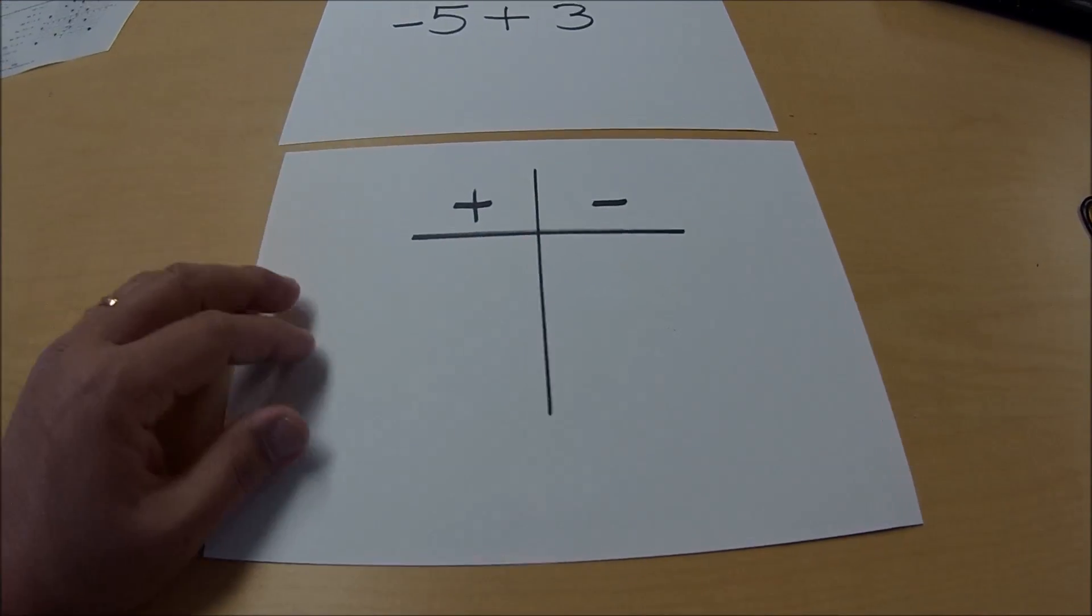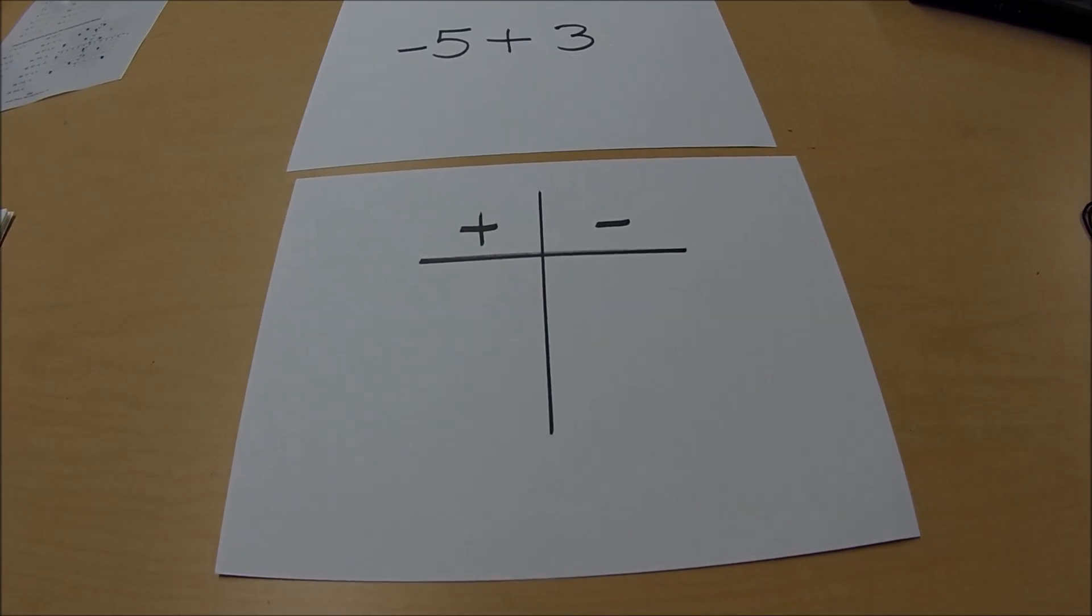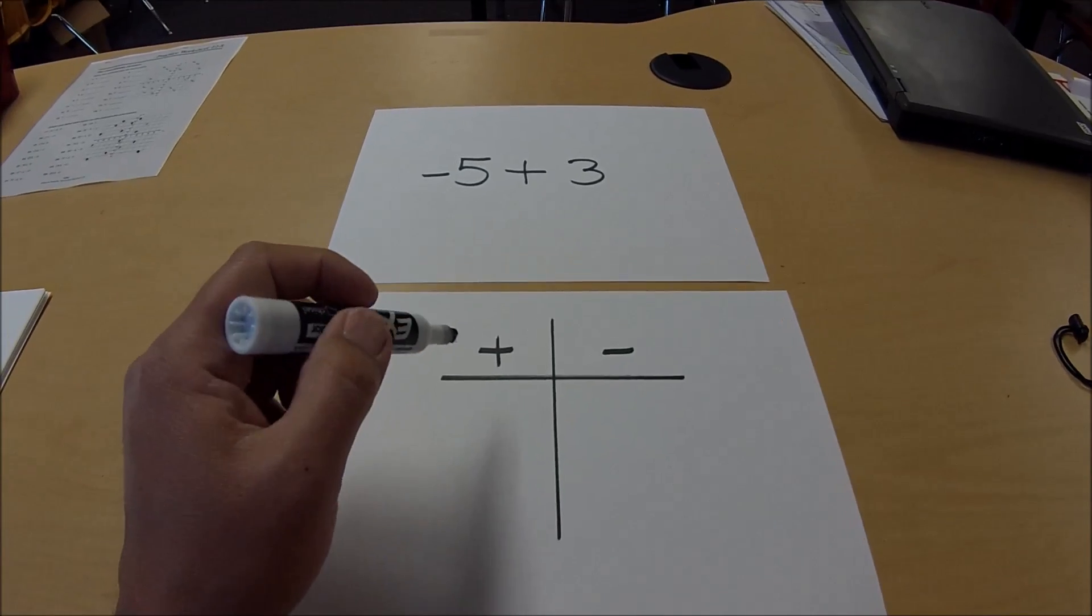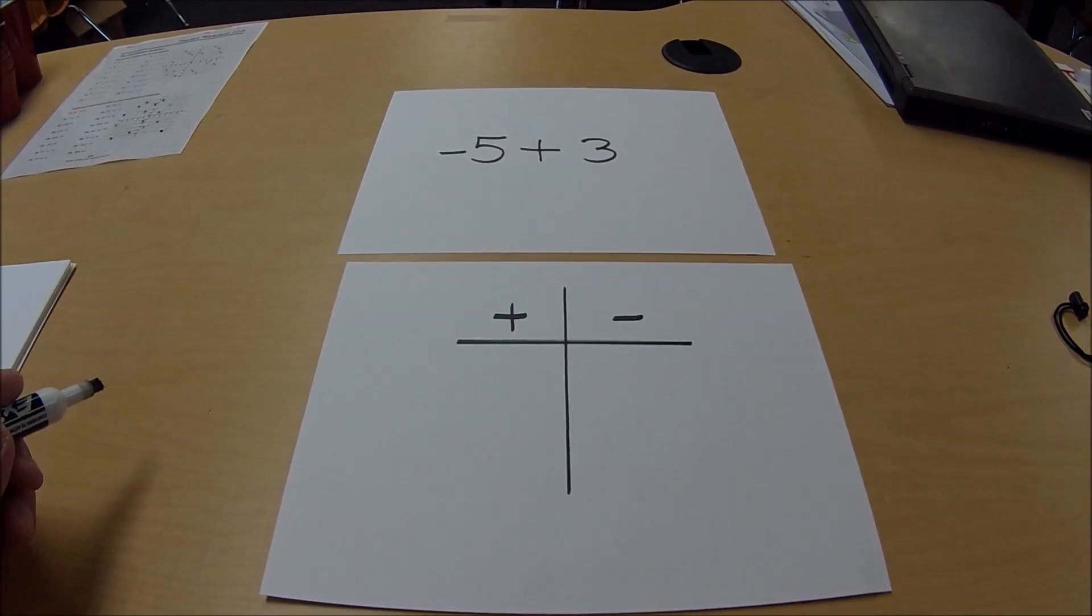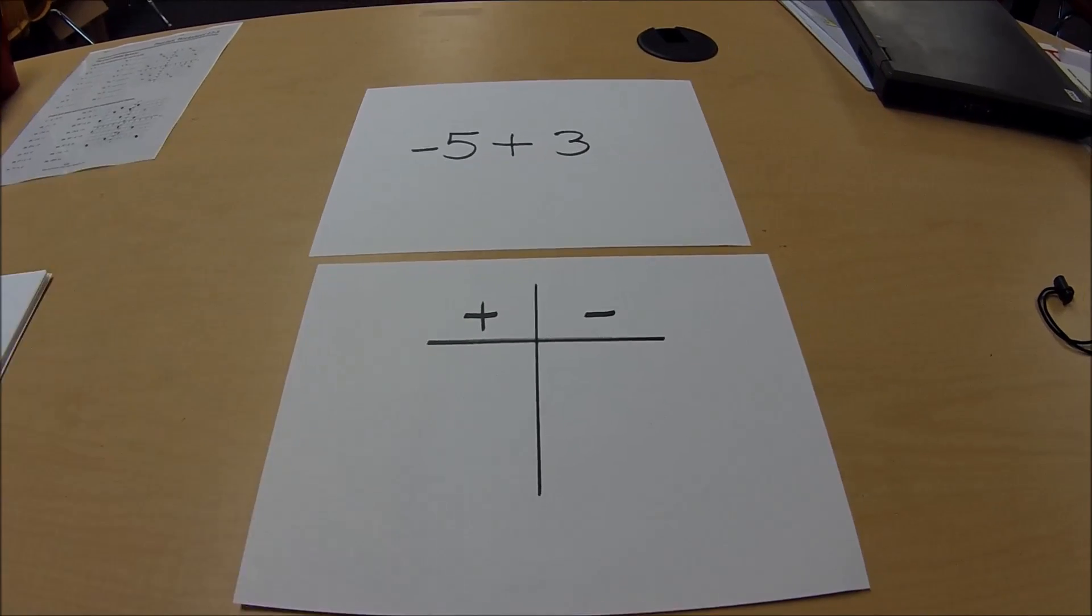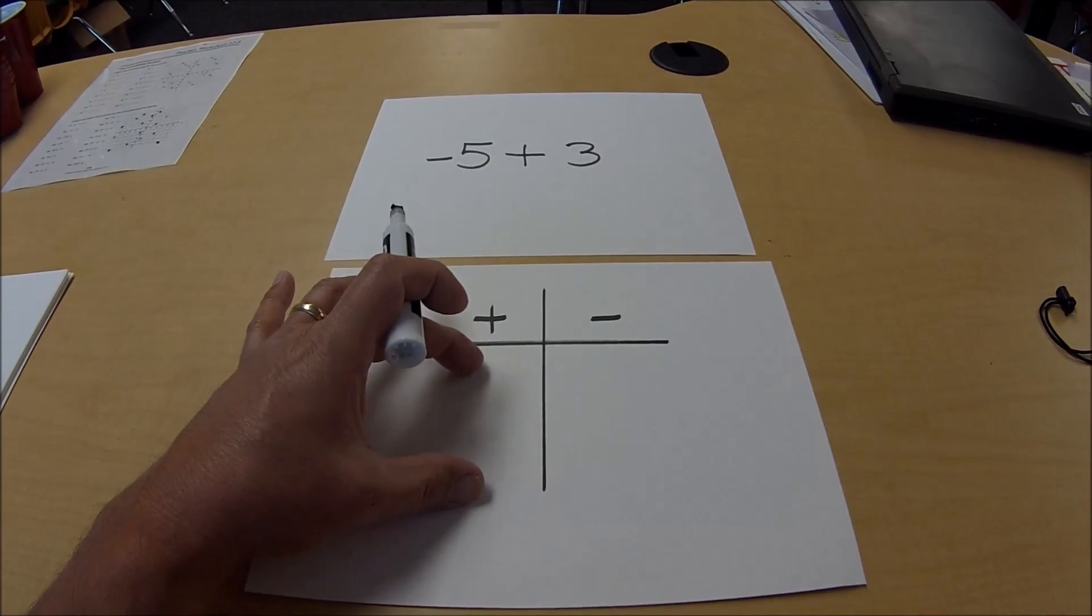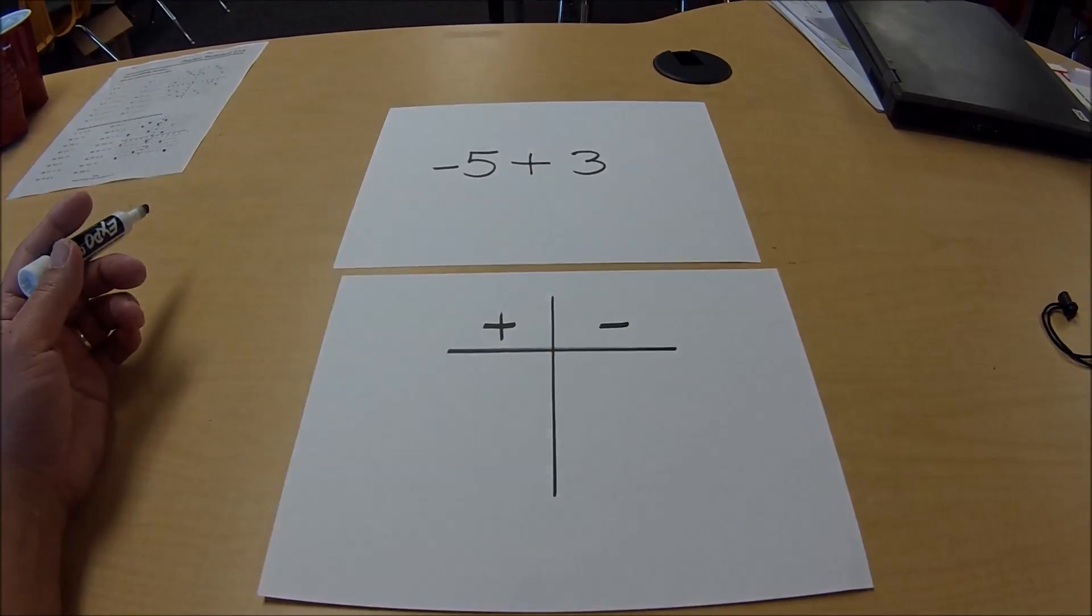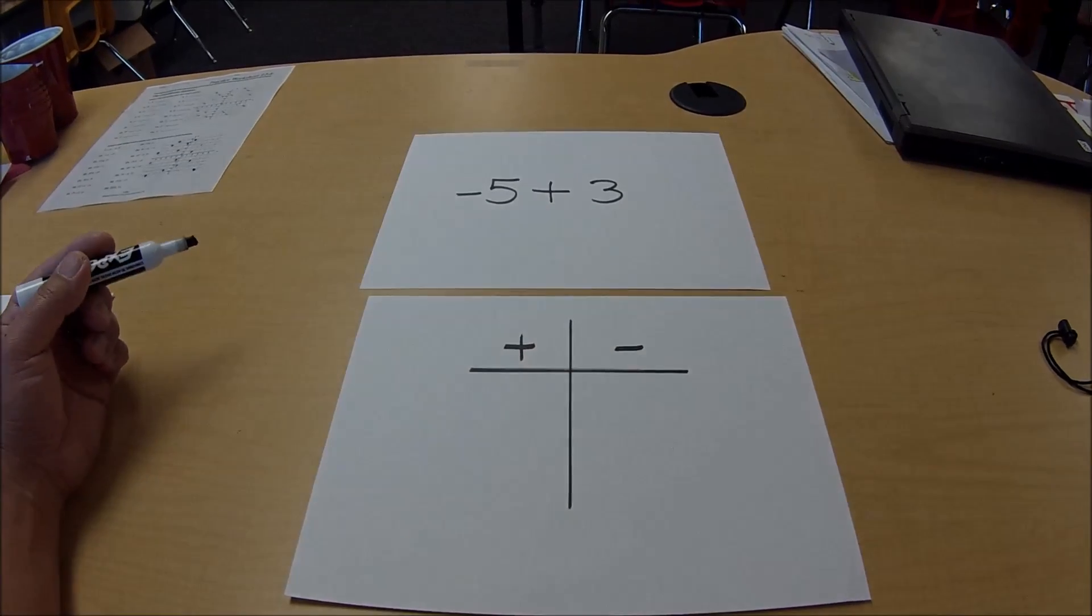So what I ask my students to do is, if they're having a hard time, an easy way to do this is just to make a t-chart and have a positive side and a negative side. What I ask them to do is basically look at it as a football team, a baseball team, where one team is one side and the other team is on the other side. Basically in this case here, a positive side and a negative side.